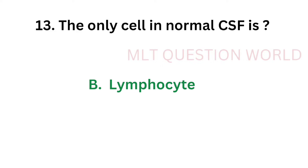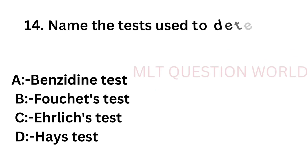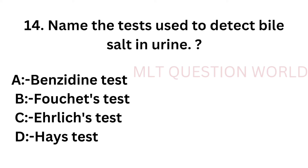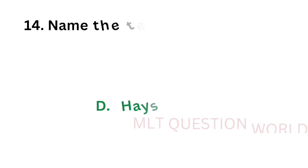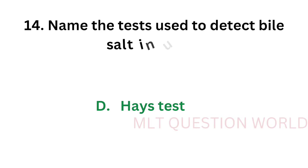These questions are familiar to you and you all knew the answers because we have discussed them many times. Question number 14: Name the test used to detect bile salt in urine. Option A: Benzerine test, option B: Fauchus test, option C: Ehrlich test, option D: Haze test. The correct answer is option D, Haze test. The test used to detect bile salt in urine is the haze test.